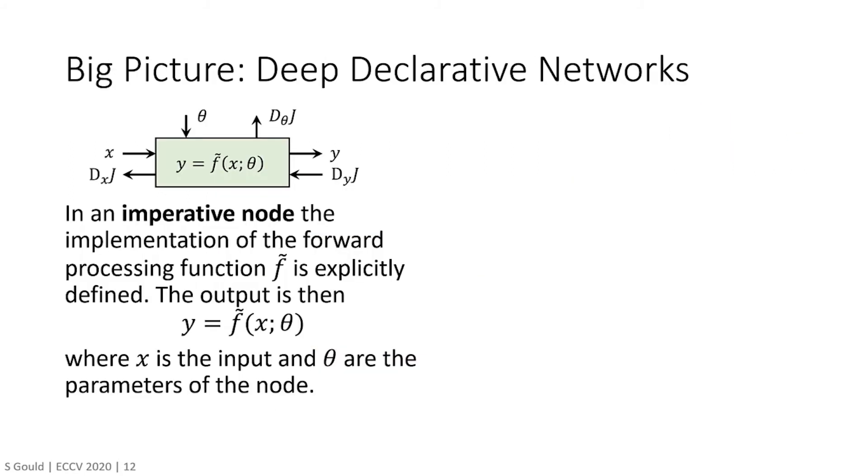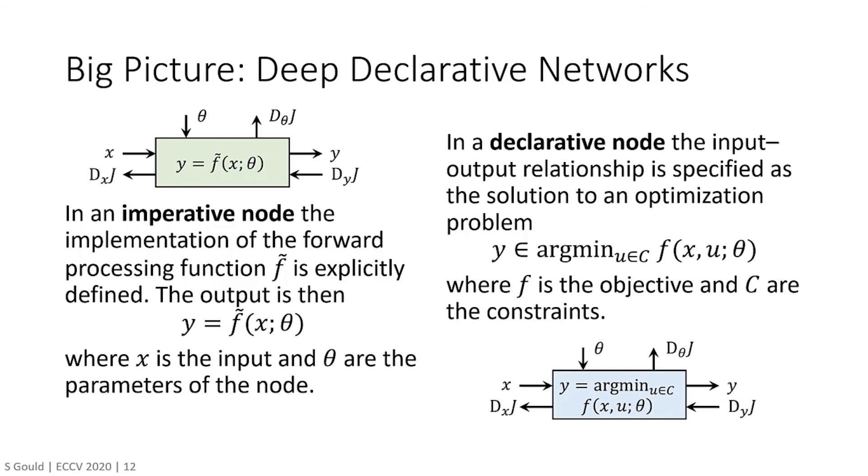To distinguish conventional deep learning models from those with embedded optimization problems, we call the latter deep declarative networks, borrowing from the nomenclature of the programming languages community. Here an imperative node in a traditional deep learning model explicitly defines the output of the node as a function of its input. In a declarative node, the input and output relationship is specified as the solution to an optimization problem.